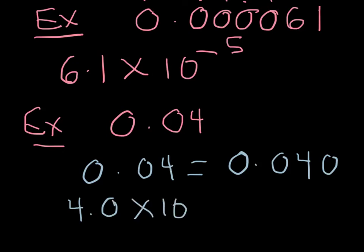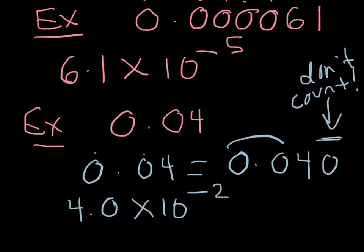And negative exponent and I have two zeros in total. Interesting thing to keep in mind I don't count this zero. Don't count that one. Just count the 2 here before the first non-zero digit so that's important. And so I have two zeros so it's going to be to the negative 2.